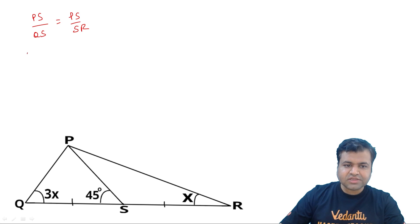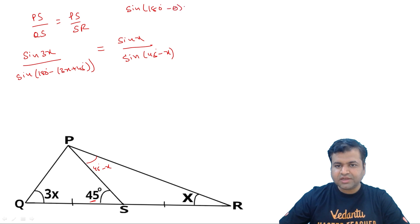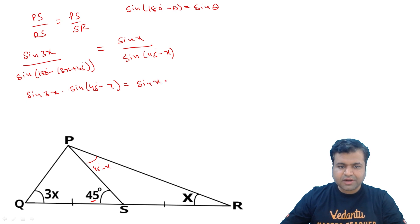So simply put sine rule. PS ke saamne wala angle 3x hai. So sin of 3x. QS ke saamne wala angle kya banayega? 180 minus 3x plus 45. So I can write it as sin of 180 minus 3x plus 45. That is equal to PS ke saamne wala angle is sin x. And this angle, this angle 45 degree hai. So this is sum of two interior opposite. This should be 45 minus x. So SR ke saamne banayega sin of 45 minus x. And we know sin of 180 minus theta is nothing but sin theta.